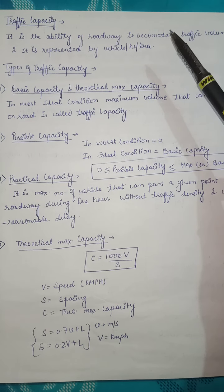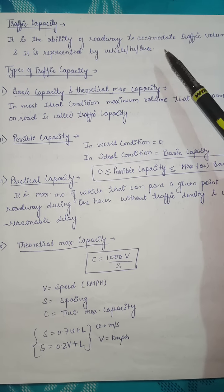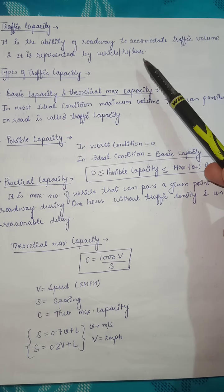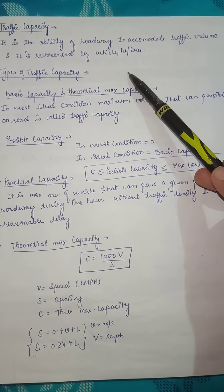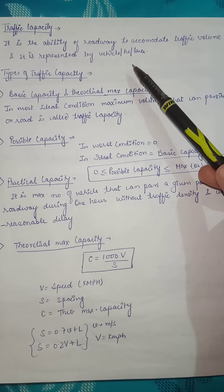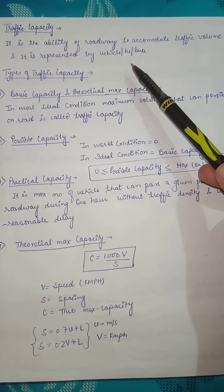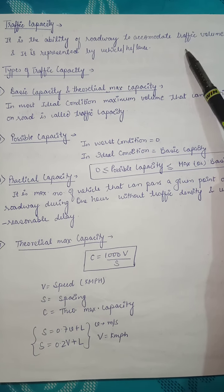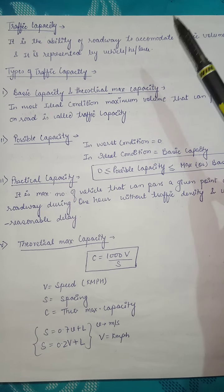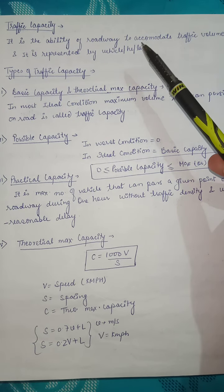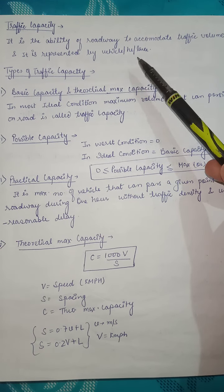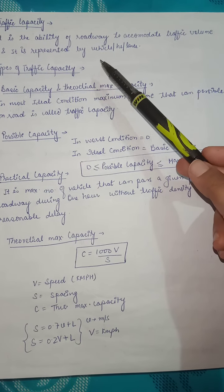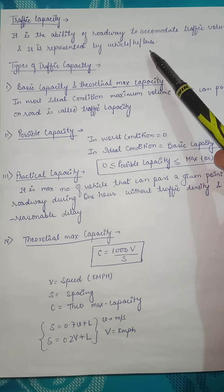If there is a lane, the number of vehicles accumulated in that particular roadway in one hour — the number of traffic volume accumulated in that roadway — it is the ability of a roadway to accumulate traffic volume, and it is represented by vehicles per hour per lane.